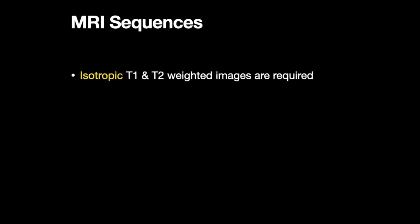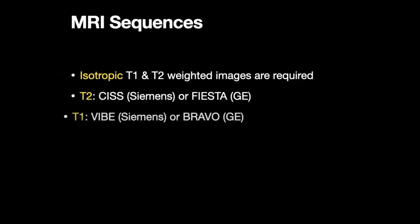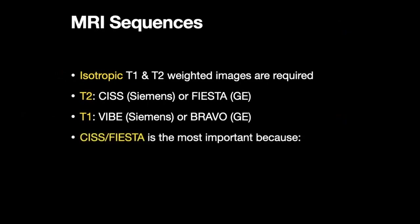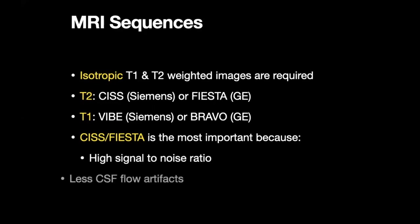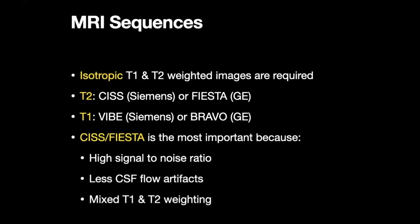We need isotropic sequences to visualize the cranial nerves. Isotropic sequences can be reconstructed in any plane regardless of the plane of acquisition. CISS and FIESTA are T2-weighted sequences while VIBE and BRAVO are T1-weighted sequences. Both can be obtained pre- as well as post-contrast. Of these, CISS in Siemens and FIESTA in GE are the most important because of high signal-to-noise ratio, less CSF flow artifacts, and mixed T1 and T2 weighting which enables post-contrast imaging even though it is a T2-weighted sequence.